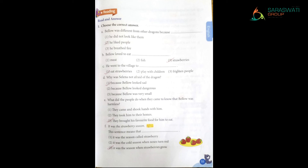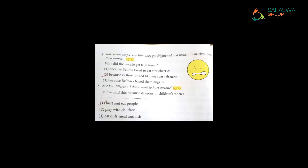'It was the strawberry season' — this means it was the season when strawberries grow. 'When people saw him they got frightened' — because Bello looked like any scary dragon. 'No, I'm different, I don't want to hurt anyone' — Bello said this because dragons in children's stories hurt and eat people, so people generally think all dragons are dangerous and breathe fire. That was all about our reading portion.